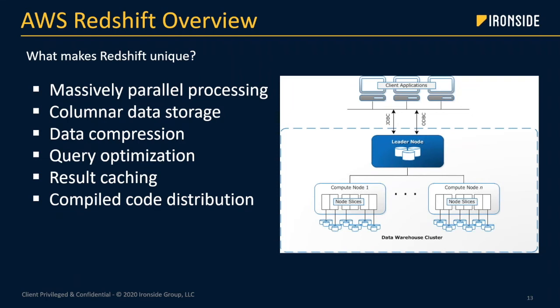Redshift also does result caching — it caches the results of queries in memory on the leader node. When a user submits a query, it checks the results cache for a cached copy. If it finds a match, Redshift uses the cached results rather than re-executing the query. Not only is this fast, but there's actually no cost for cache pulls — so that's a query returned with zero compute cost. The leader node also distributes optimized compiled code across all nodes in a cluster, eliminating the overhead of an interpreter and increasing execution speed. It's doing a lot of work to pull back petabytes of data very, very quickly.